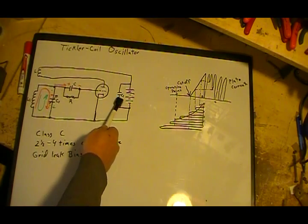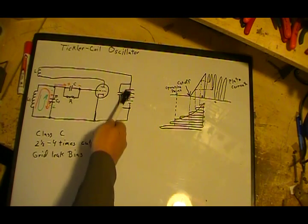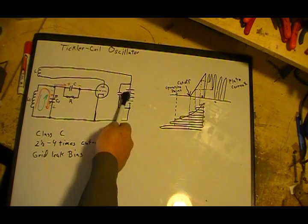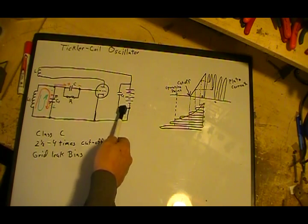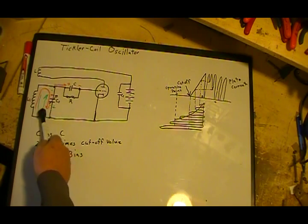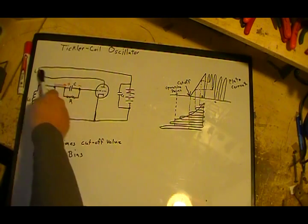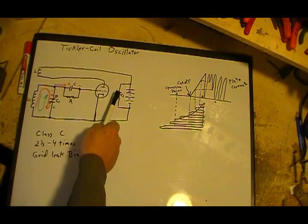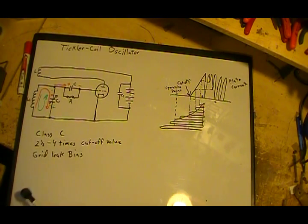C2 over here across the B plus or the battery, this can be a battery, it can be your power supply. C2 is just a return path for the AC back, so you get your AC going through and it returns back to here. That's all it's on there for.